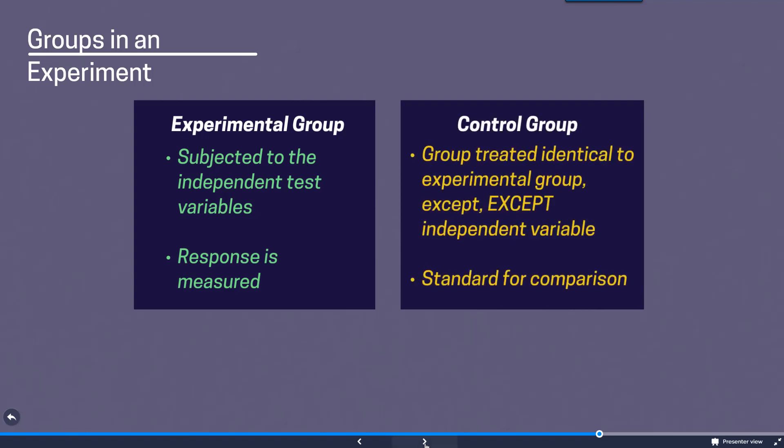We are also going to have something called a control group, which is going to be the group that's treated identical to the experimental group. With the exception, and a big exception, that the independent variable is not going to be applied. So really this serves as a standard for comparison of the results that we obtain from both groups.